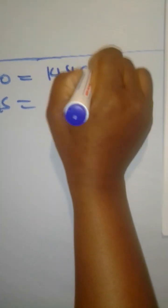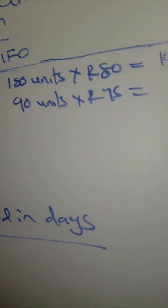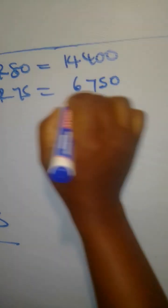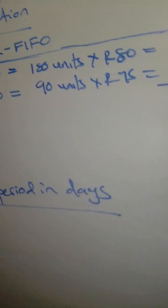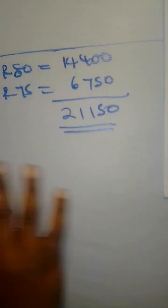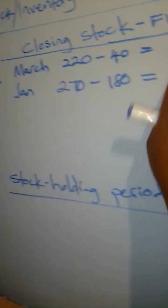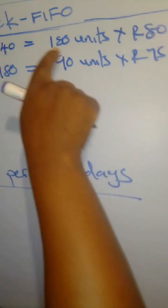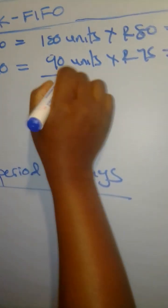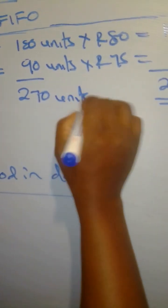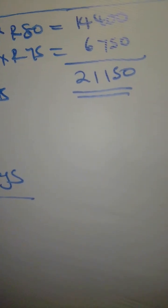Now let's calculate the totals. 180 units times R80 equals R14,400. 90 units times R75 equals R6,750. Adding these two amounts: R14,400 plus R6,750 gives us R21,150. That is our closing stock using the FIFO method. Remember, the last purchase was in March and we only had 180 units, so we went up to January to get the other 90 units, making 270 units in total, valued at R21,150.